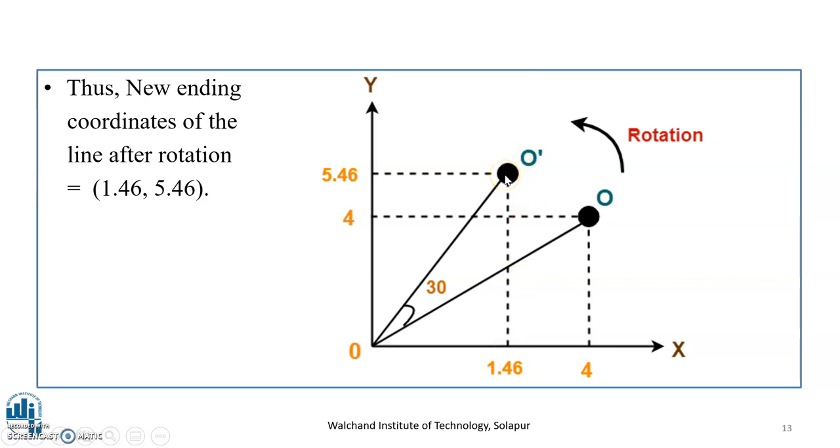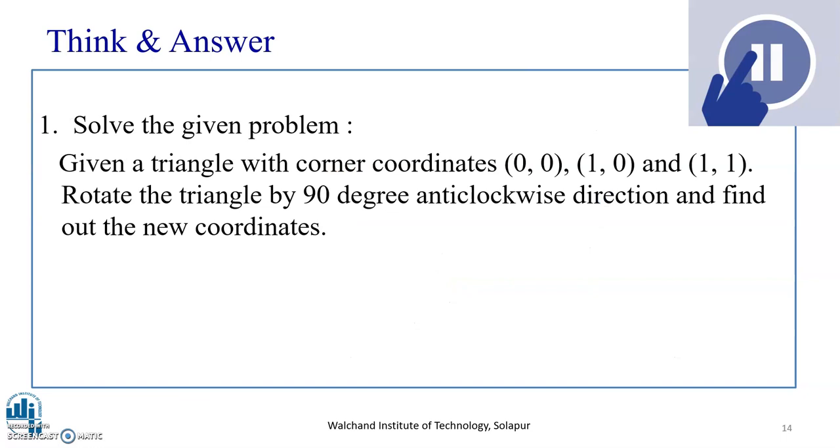I hope you have understood the concept of 2D rotation. Now I want you all to pause the video for some time and solve the given problem. Here, the given problem is for a triangle with coordinates 0, 0, 1, 0, and 1, 1. You are expected to rotate the triangle by 90 degree anticlockwise direction and find out the new coordinate. Pause the video for some time and think for the answer.